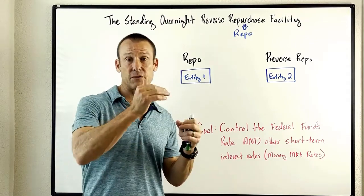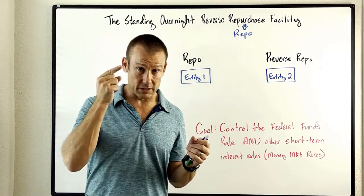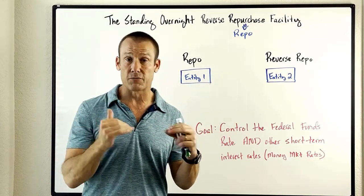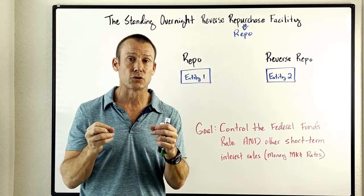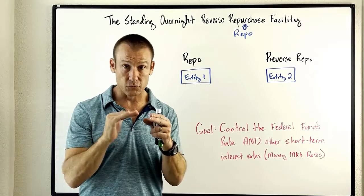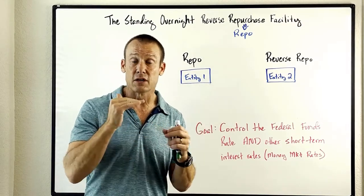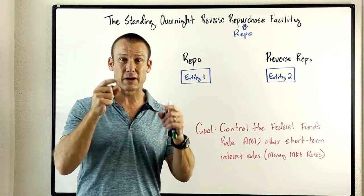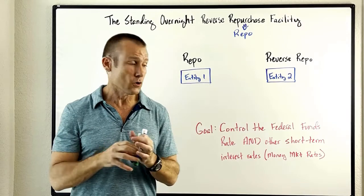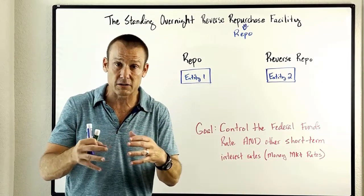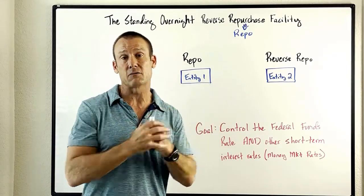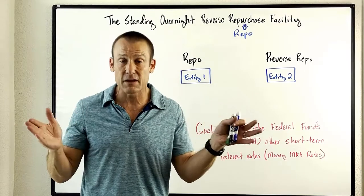In 2015 — liftoff — they had to raise the federal funds rate. One tool they knew for sure was the interest rate on reserve balances; raising that would put a floor for the federal funds rate, at least for those institutions that earn interest on reserve balances — i.e., banks. But there are other non-bank financial institutions who participate in money markets and even the federal funds rate that are not able to get interest rate on reserve balances.